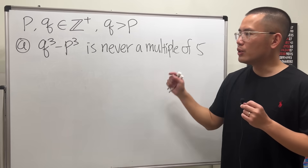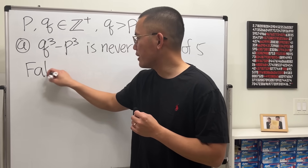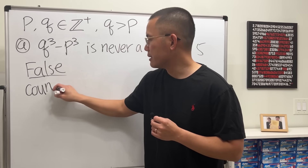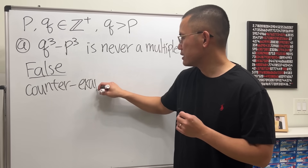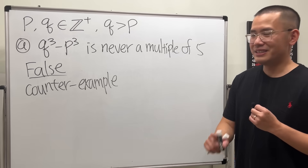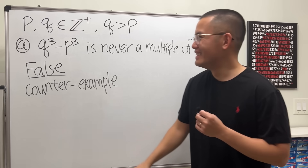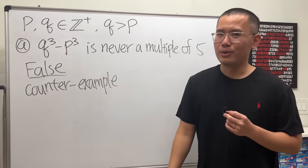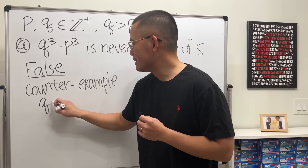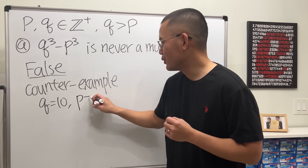Well, this statement is false, and to show a statement is false we can just provide a counter-example. First, let's make it clear: this is false. Now for a counter-example — you cannot use zero because p and q have to be positive integers. Let's make both of them multiples of five. I'll set q equal to 10 (since q has to be bigger than p) and p equal to 5.